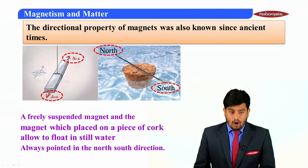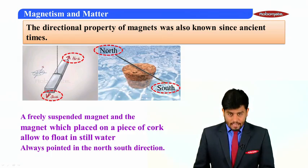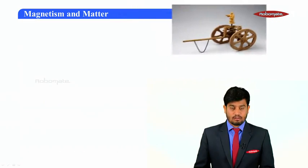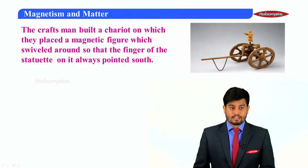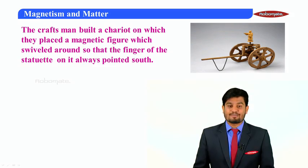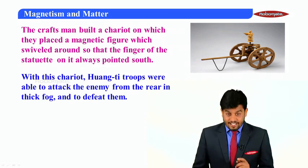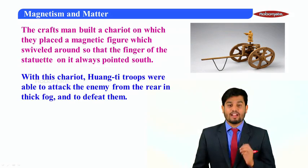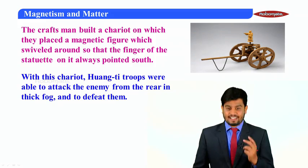They have also used these magnets in many applications. The craftsman built a chariot on which they placed a magnetic figure which swiveled around so that the finger of the statuette on it always pointed south. With this chariot, Huang-ti troops were able to attack the enemies from the rear in thick fog and to defeat them. This was one of the applications in the earlier days using magnets.